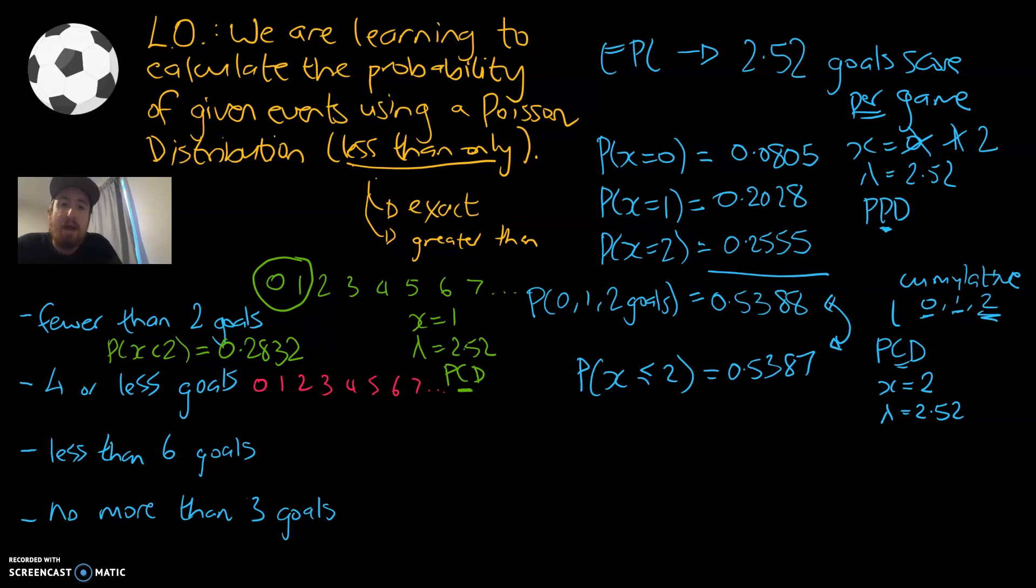Four or less. Would that include four goals? Yes, it would, because it says four or anything less than that. I'm going to circle all of these ones here. So I'm interested in the probability of zero, one, two, three, or four goals.